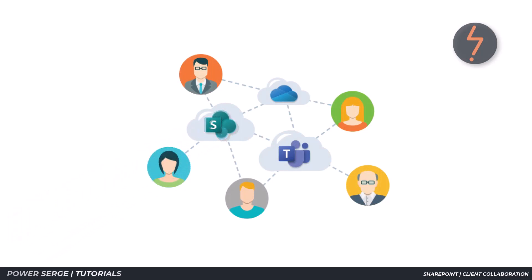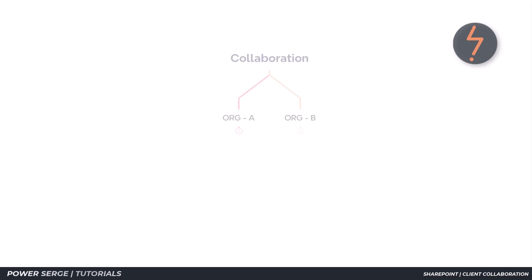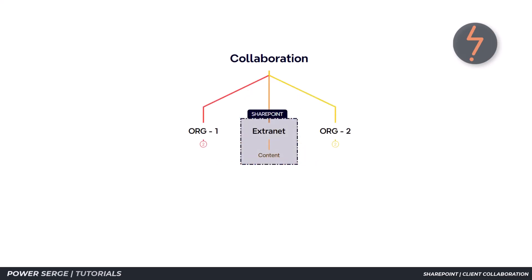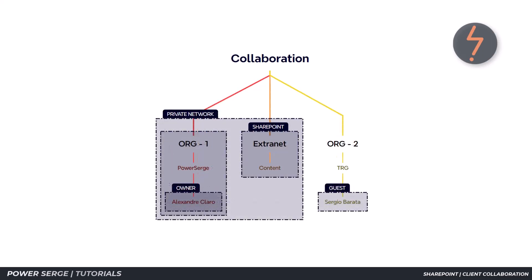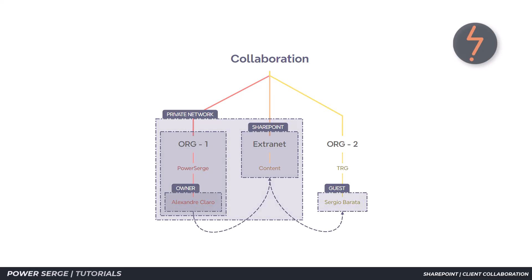In this tutorial, I will simulate a collaboration between two organizations. In essence, we are talking about an extranet — a privately maintained computer network that uses the internet to allow partial access to authorized partners. This simulation is important, as it will help you understand the nuances of the collaboration and have the confidence to set it up yourself.